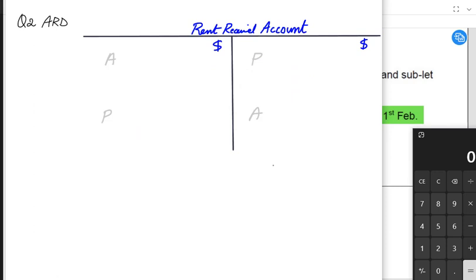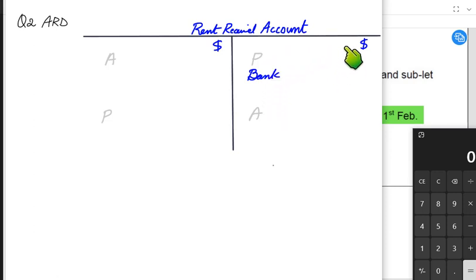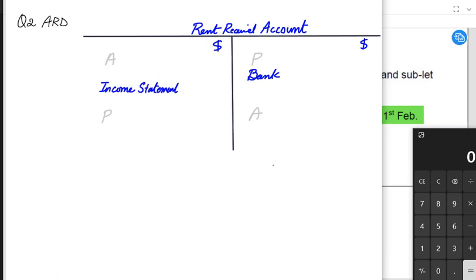The opening balance for a liability always comes on the credit side, and the closing balance goes on the debit side. Income has a credit nature, so whenever we receive payment from our tenant, bank is debited and rent received is credited. At the end of the year, this income account needs to be transferred to the income statement — we debit the rent received account and transfer it to the income statement.